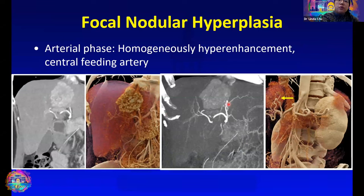On the MIPs, we can nicely look at the feeding vessels, and on the cinematic rendering images, we can see how the central feeding vessel really goes to the middle of the lesion. We can then appreciate some fine feeding arteries in a spoke wheel pattern, like a bike wheel that goes all the way to the periphery.